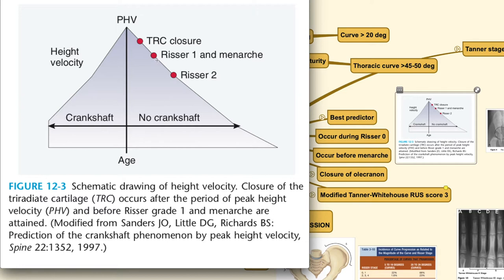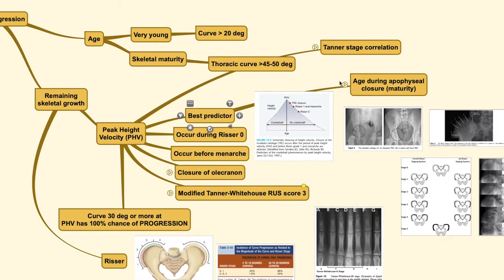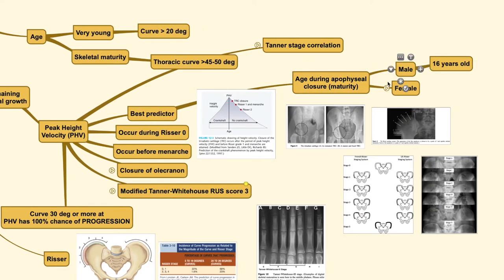If you perform posterior fusion surgery after the peak height velocity moment, there will be no crankshaft phenomenon. The best predictor to use is the age during apophyseal closure of maturity — approximately 16 years old in males and 14 years old in females.